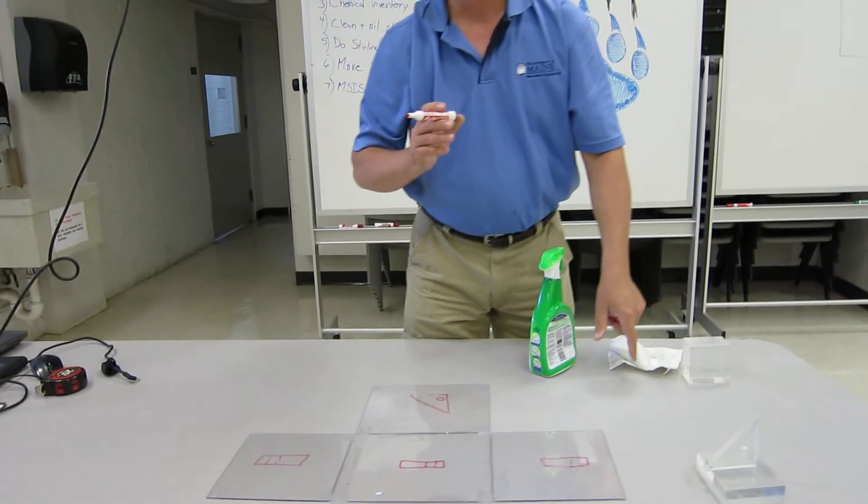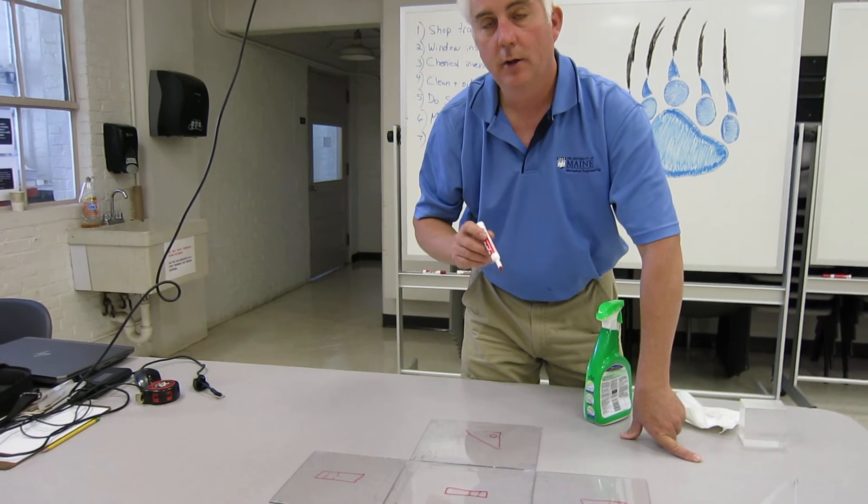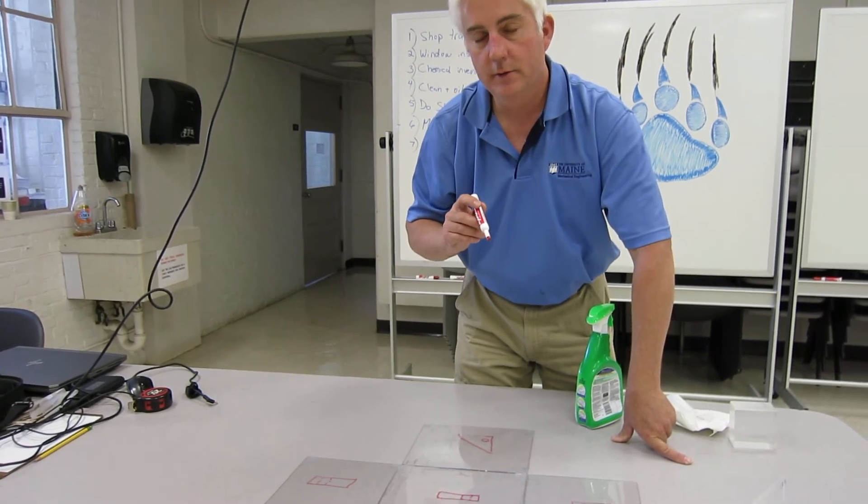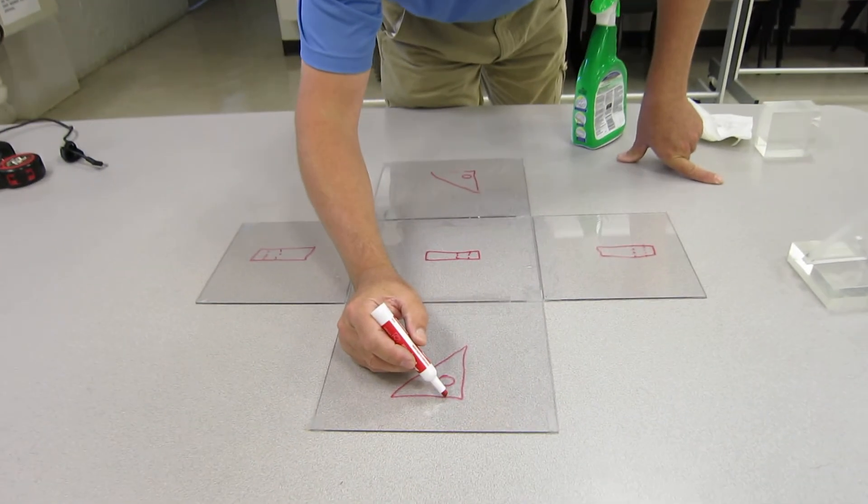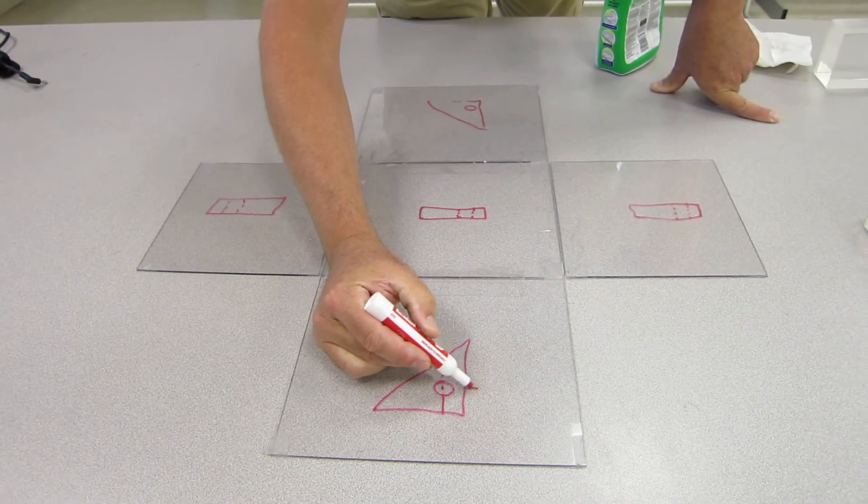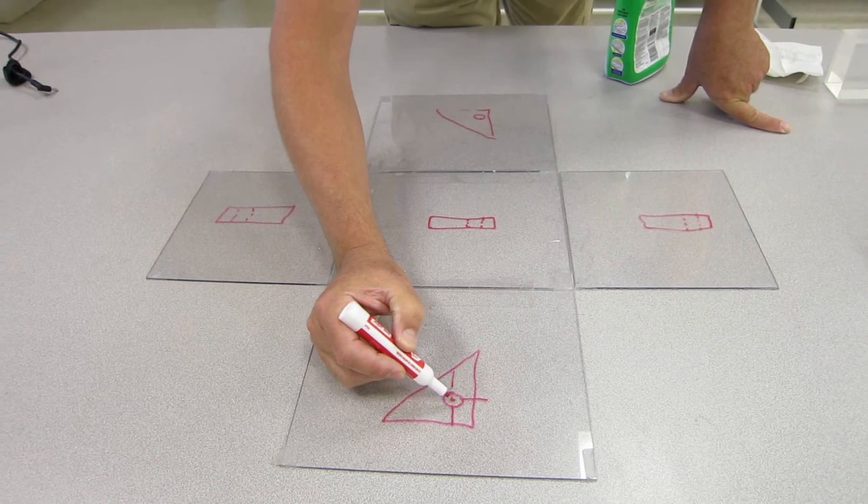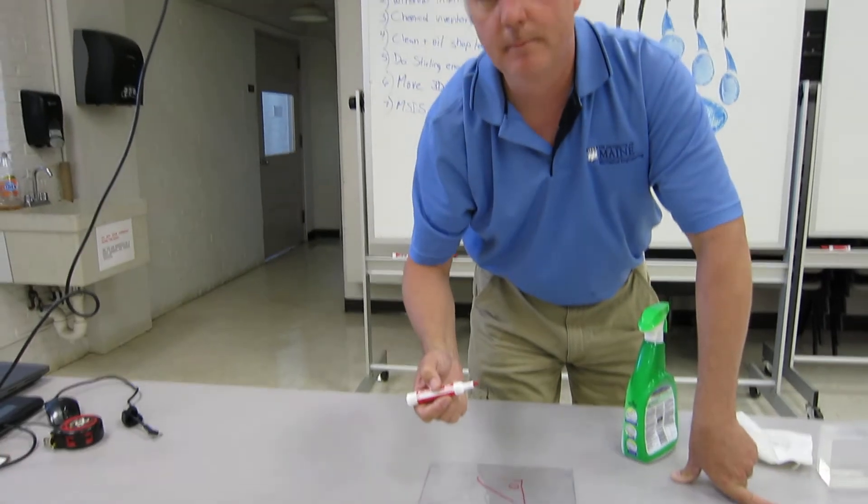Now, I want you to notice something. Generally in a blueprint, we annotate holes with something called a center mark. So on my blueprints, you're going to see a center mark, and it looks like this. It's like kind of the crosshairs in a rifle scope, if you're familiar with that.